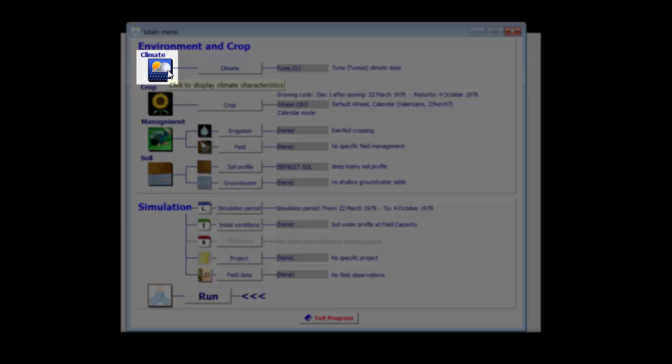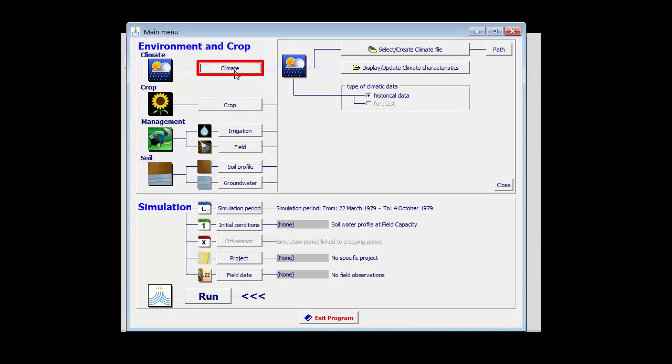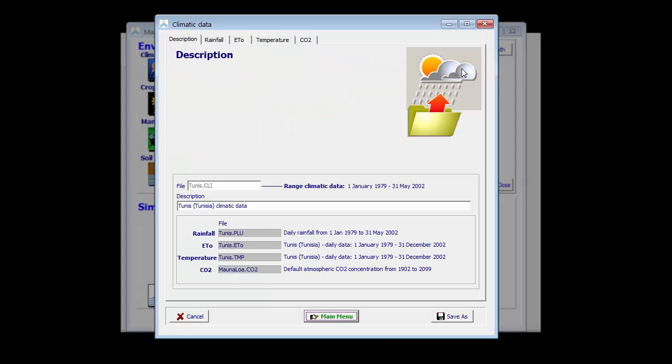By clicking on the icon, we can display the climate file. Or when we click on the climate button, we can also display and update the climate characteristics by clicking on this button. This is the screen where climatic data is displayed. It consists of a tabular sheet with a description telling which is the rainfall file, the ET node file, the temperature file, and the selected CO2 file.